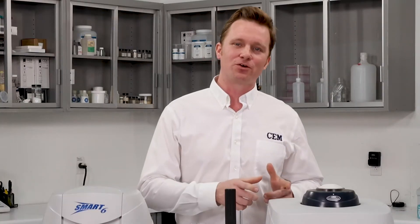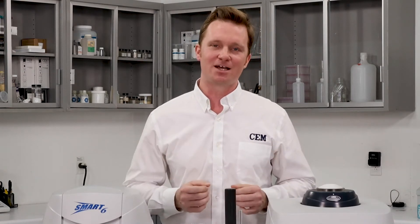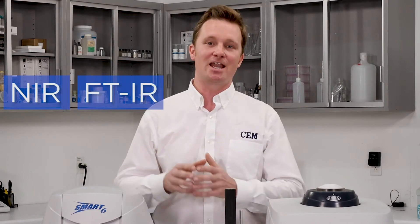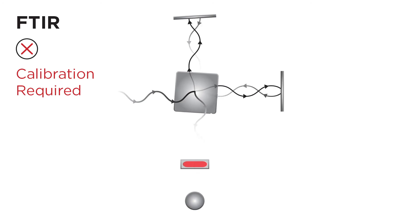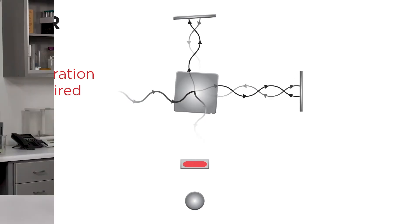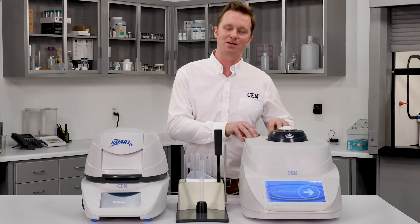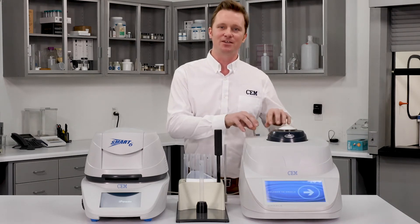Now that we've seen how the Oracle compares to other NMR analyzers, let's take a broader look at how it compares to other rapid fat analyzers on the market — specifically NIR and FTIR. These are both spectroscopic methods that take an optical signal and through chemometrics generate a fat result. The issue is that they have a complex optical train that requires constant recalibration in order to maintain accuracy. The Oracle, by contrast, has no moving parts and maintains reference-level accuracy day in and day out.